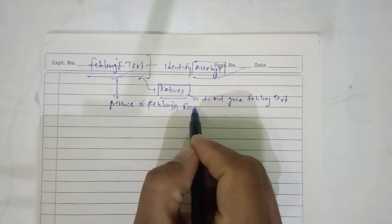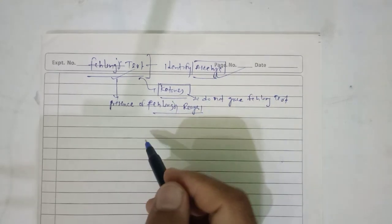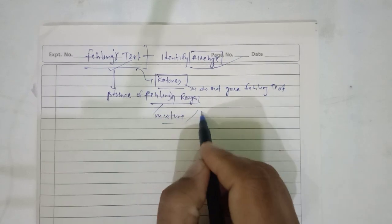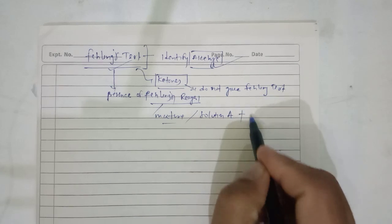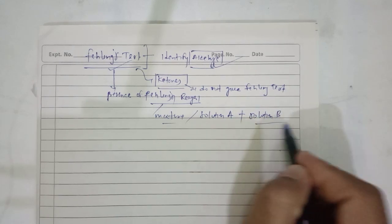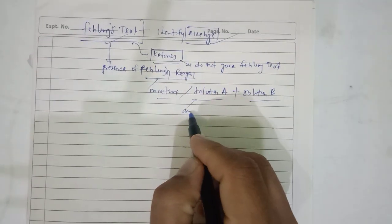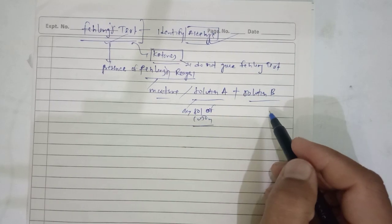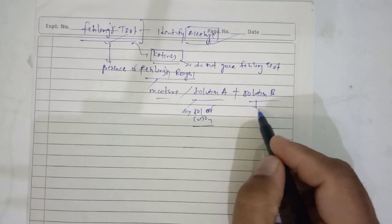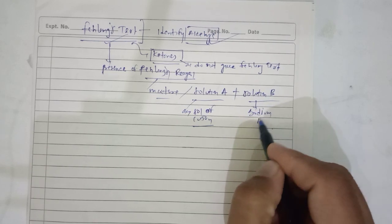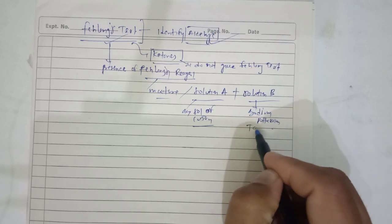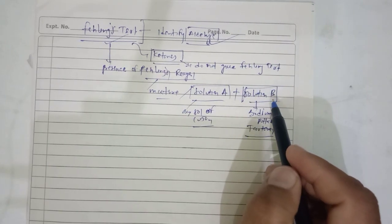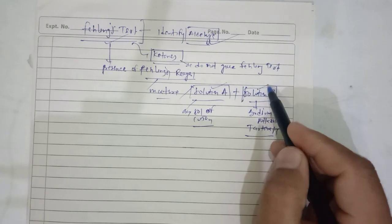Fehling's test takes place in the presence of Fehling's reagent. Fehling's reagent is a mixture of Solution A and Solution B. Solution A is an aqueous solution of copper sulphate, and Solution B is sodium potassium tartrate.